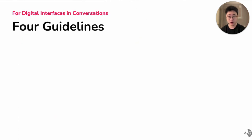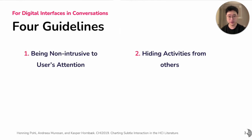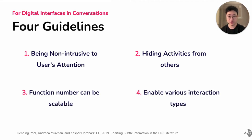To achieve this goal, we proposed four design guidelines for interfaces in conversations. First, they should leverage the concept of subtle interaction — being non-intrusive to users' attention so users can better focus on the conversation. Users can also easily hide the manipulation to minimize distraction to others. In addition, the system should support scalable function numbers and enable various interaction types to satisfy users' different needs in conversation.